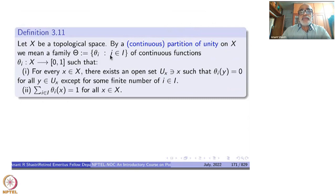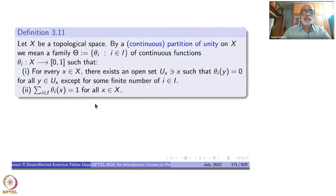The θ_i are members of this continuous family. They will all vanish except for finitely many of these θ_i's. Since there are only finitely many which are non-zero, their sum makes sense. Even if I write the total summation over i in I, this will be a finite sum for each x. That sum must be equal to 1 — this is the second condition. The second condition gives the name 'partition of unity.' This unity is the constant function 1, broken up into a family of continuous functions whose sum total equals 1.